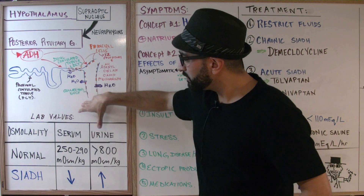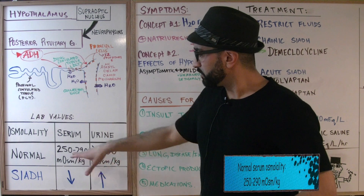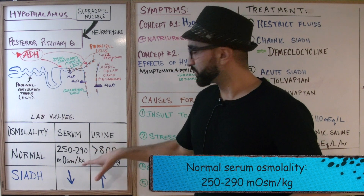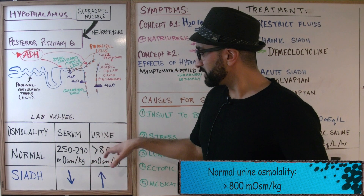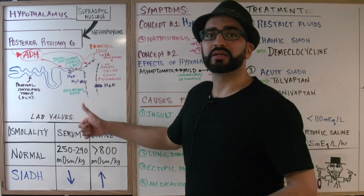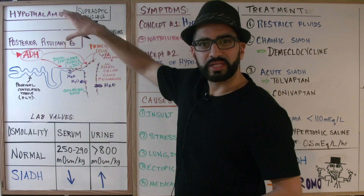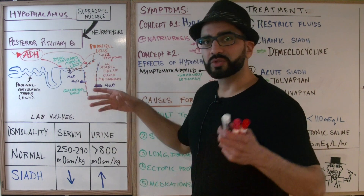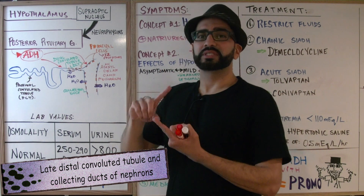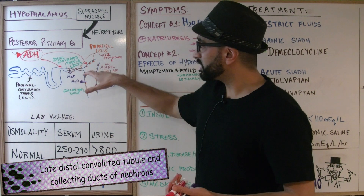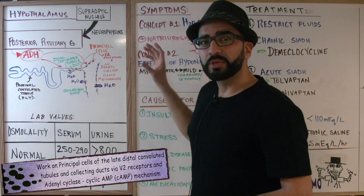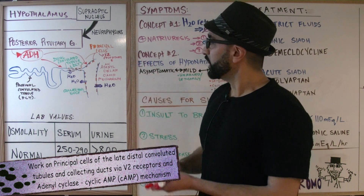Looking at this table, normal serum osmolality is between 285 to 290 milliosmoles per kilogram, and normal urine osmolality is above 800 milliosmoles per kilogram. When serum osmolality rises above normal, the posterior pituitary releases ADH. ADH then travels to the nephrons, working on the distal convoluted tubule and collecting ducts — specifically on principal cells via V2 receptors and an adenylyl cyclase/cyclic AMP mechanism.